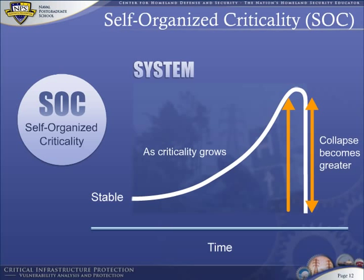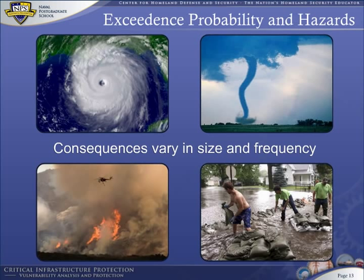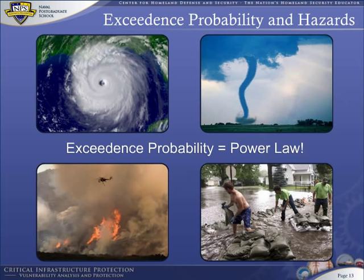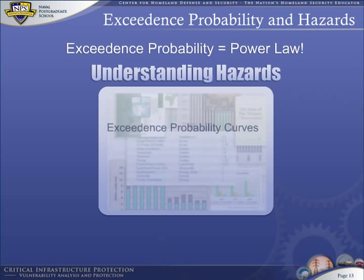Natural hazards produce consequences that vary in size and frequency, but they have one thing in common: their exceedance probability curves are power laws. This is an amazing result, because hazards are very different from one another, and yet we can understand them in terms of exceedance probability curves, catastrophe theory, and self-organization.